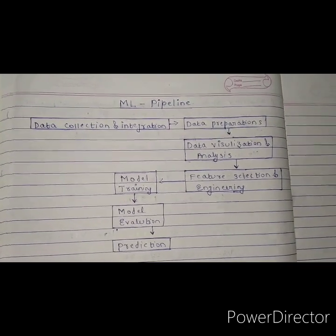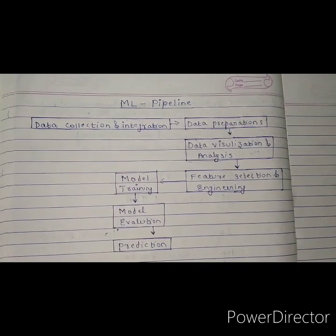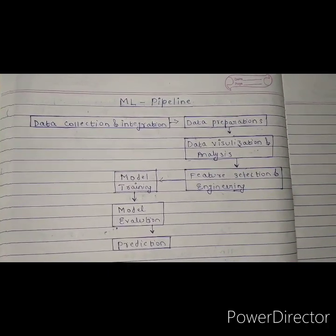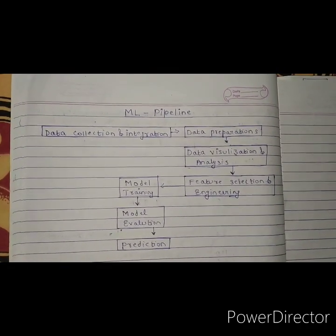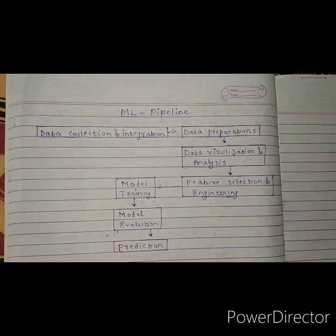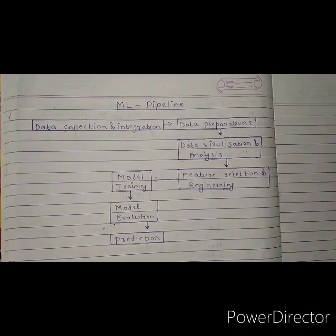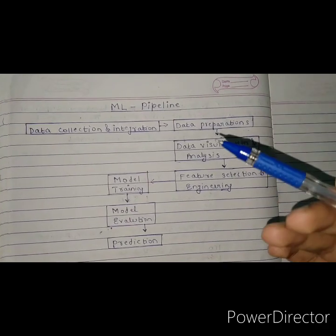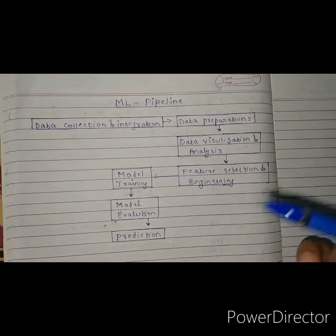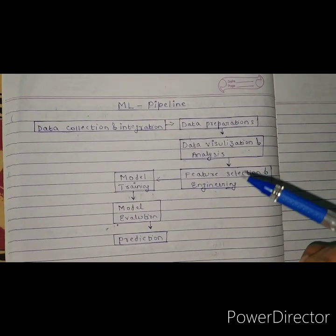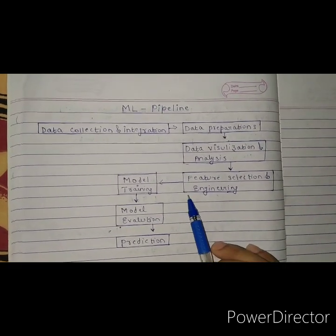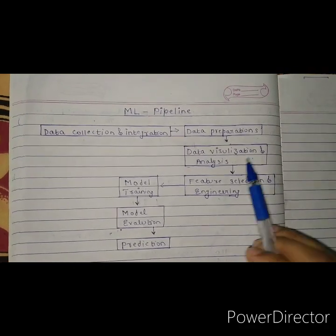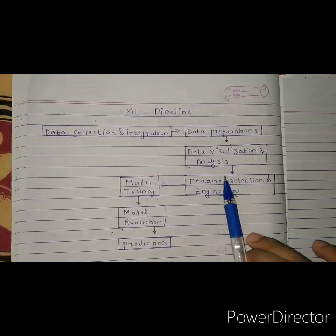आपको बार-बार उसका output चेक करना पड़ता है और जब last में minimum से minimum error हो तो समझिए कि आपका model ready है। आप कोई भी ML problem को 100% errorless expect नहीं कर सकते — आपका काम यह है कि error को जितना minimum हो सके उतना minimize करें।